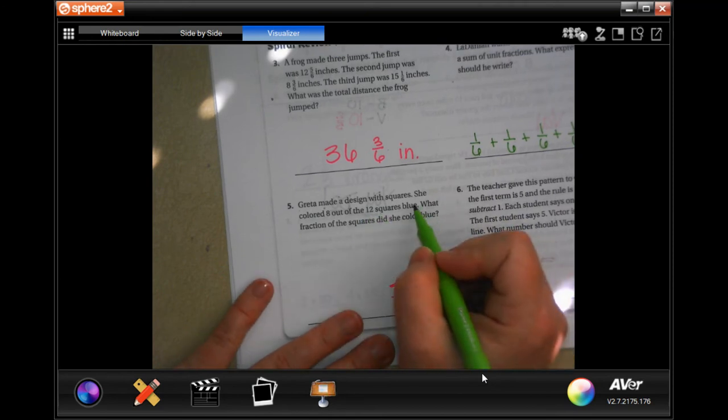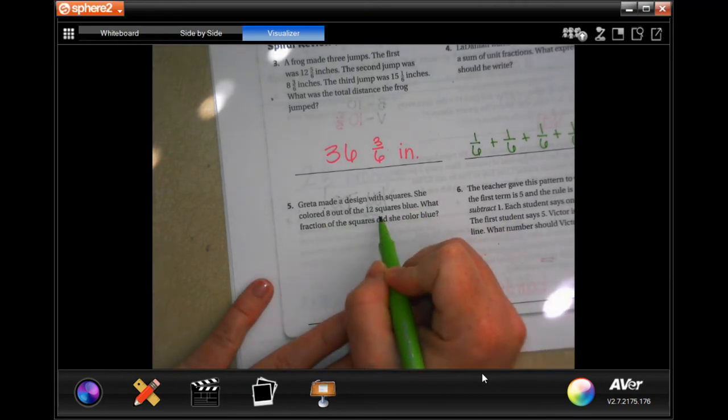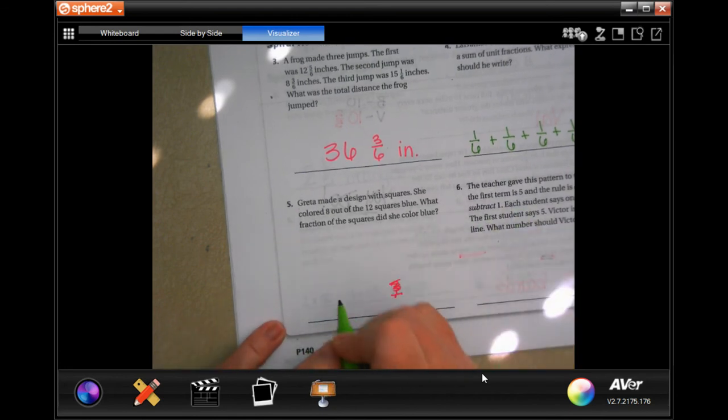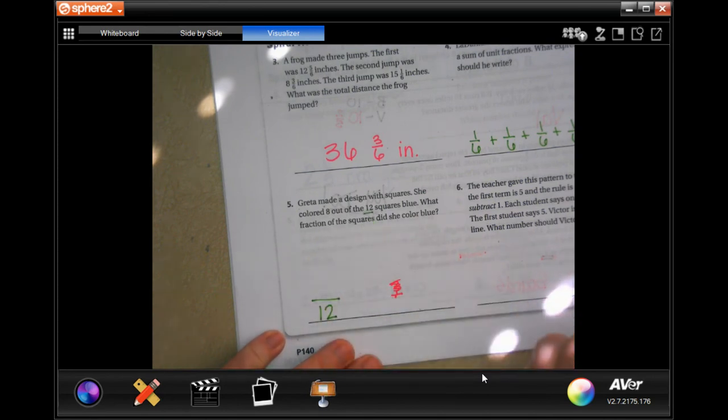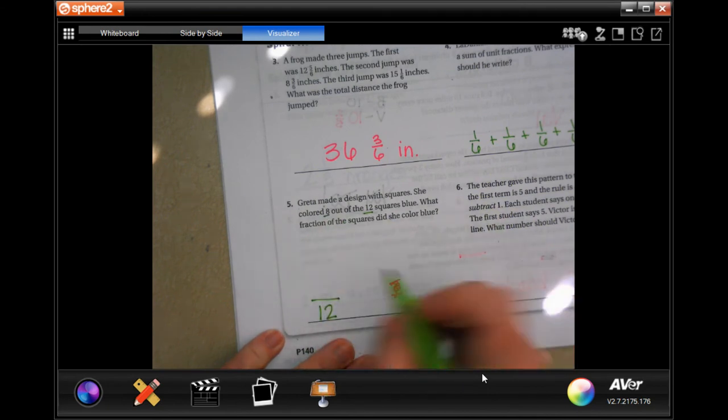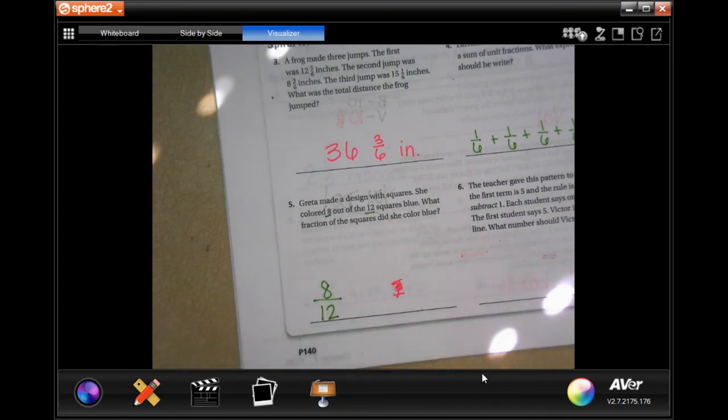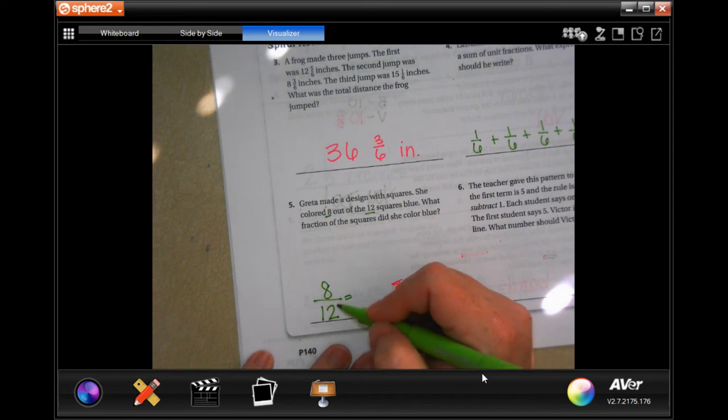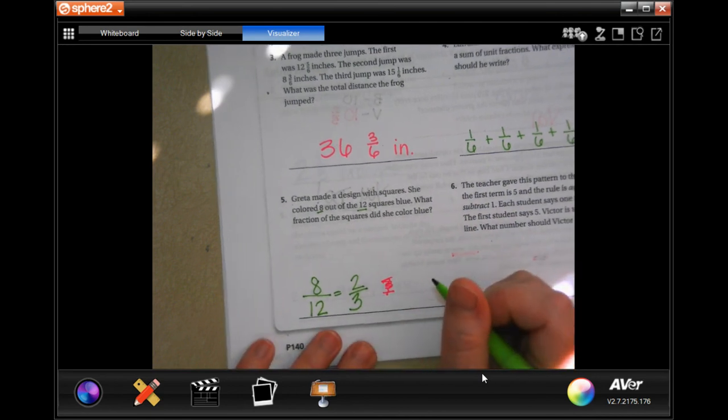Brett admitted designing with squares. She colored 8 out of the 12 squares blue. What fraction of the squares did she color blue? Well, how many squares were there all together? 12, that's going to be our denominator. She colored 8 of them blue. Now can we reduce that? Well 4 goes into 8 and 12. 4 goes into 8 twice, 4 goes into 12 three times. You can do either one of those.